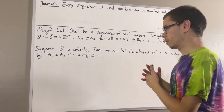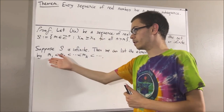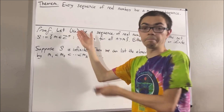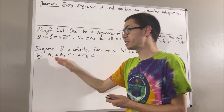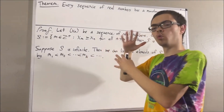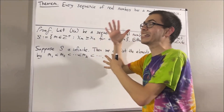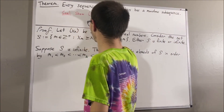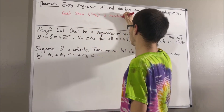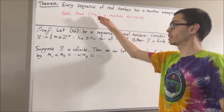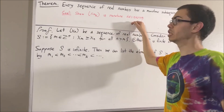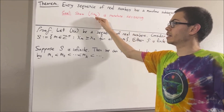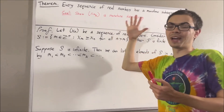This strictly increasing sequence of positive integers gives us a subsequence of xn — namely xm1, xm2, xm3, and so on. We're going to show that subsequence is monotone decreasing. We want to show that for all positive integers k, xmk is greater than or equal to xm(k+1).